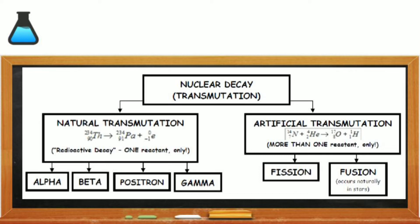There are two major types of nuclear changes, both called transmutation. In all transmutations, the identity of elements on the reactant side will be different from those on the product side — only mass and charge are conserved. In natural transmutation, an unstable nucleus decomposes into a more stable nucleus, so there is only ever one reactant. In artificial transmutation, there are always two or more reactants, and you don't need to begin with an unstable nucleus.